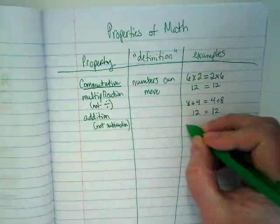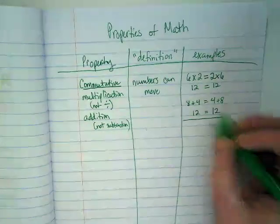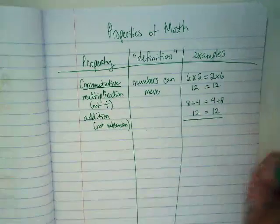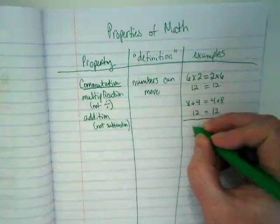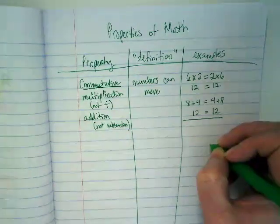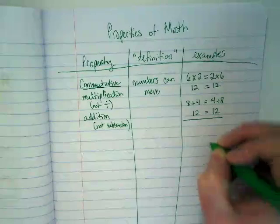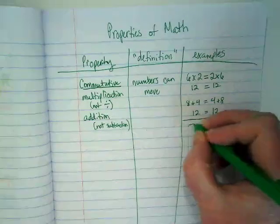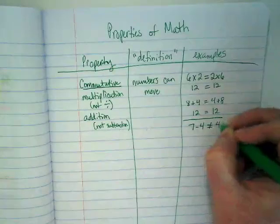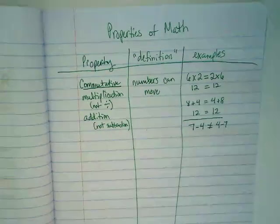It does not work with the inverses of multiplication and addition. It does not work with division or subtraction, because 7-4 is not equal to 4-7. If I move those numbers, what happens?